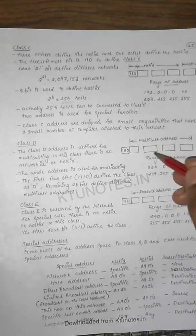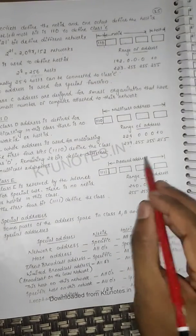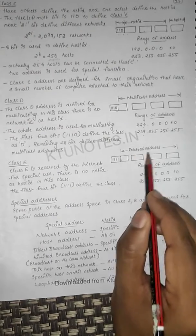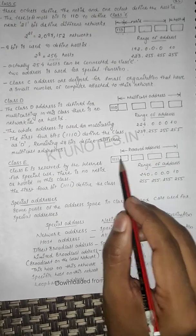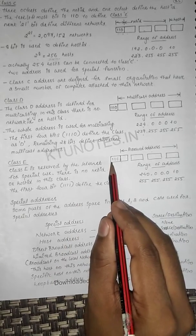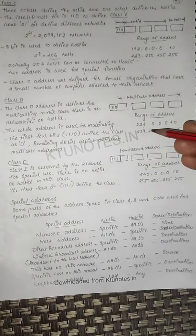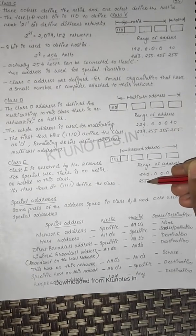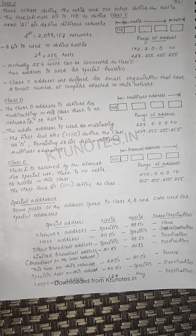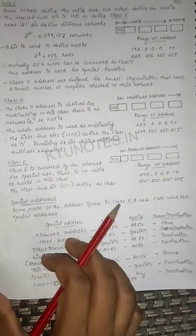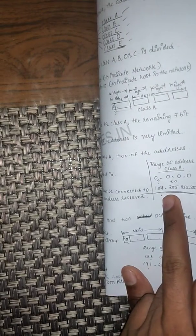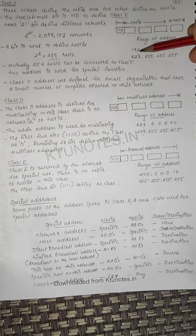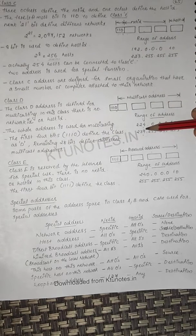Class D is defined for multicast addressing — the entire address range uses leftmost bits '1 1 1 0'. The address range for Class C is 192 to 223, Class D is 224 to 239, and finally Class E is a reserved address — reserved for future purposes — with the first four bits all being 1. Class E ranges from 240 to 255.